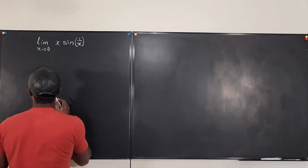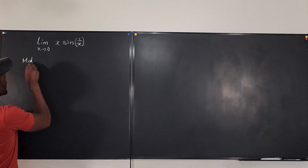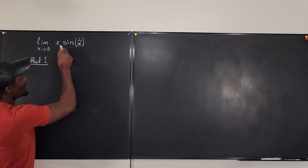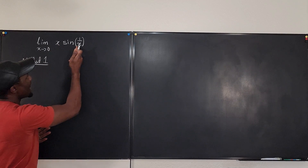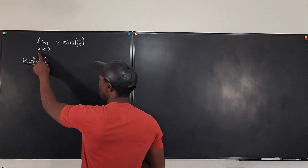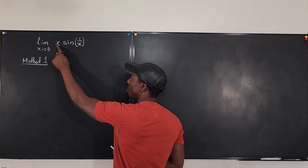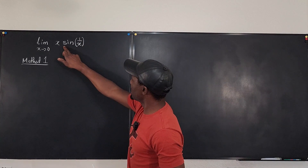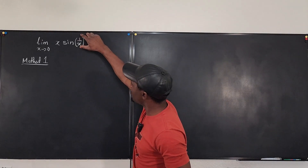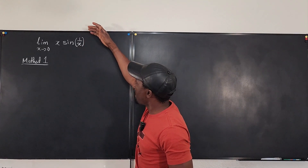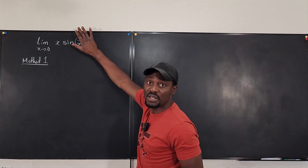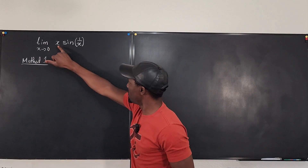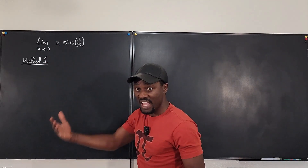Method one: I'm going to try to manipulate x and sine of 1 over x, because this is already a problem. If I plug in zero, I'm going to have zero times sine of 1 over zero — that's zero times sine of infinity. Because this is not defined, the expression itself is not defined. Because sine keeps changing, the limit does not exist, so you're multiplying zero by something that doesn't exist.